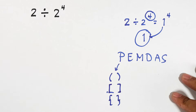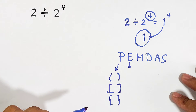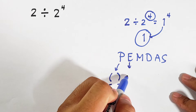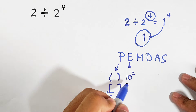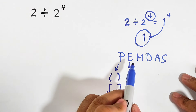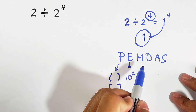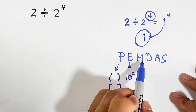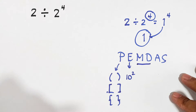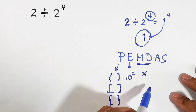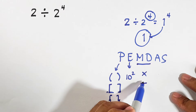Next we have the letter E for exponents. You might encounter something like 10 raised to the 2 — you will evaluate the exponent before other operations. Then we have the four fundamental operations: M, D, A, S. M is multiplication and D is division.